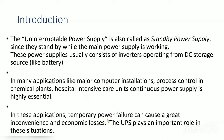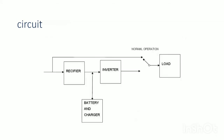Temporary failure can cause great inconvenience, economic loss, or even loss of life in hospital cases. So we require continuous power supply and UPS plays an important role in these situations. The circuit diagram of offline UPS has a main supply line, a load — which is the equipment connected — a rectifier, an inverter, and a battery.